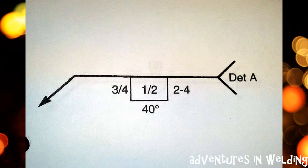How'd you do? Here's your slot weld with a 40 degree countersink, 2 inch length of slot, 3/4 inch depth of slot, filled to 1/2 inch, with a pitch of 4 inches, weld from the arrow side, and you are to reference detail A on the drawing.